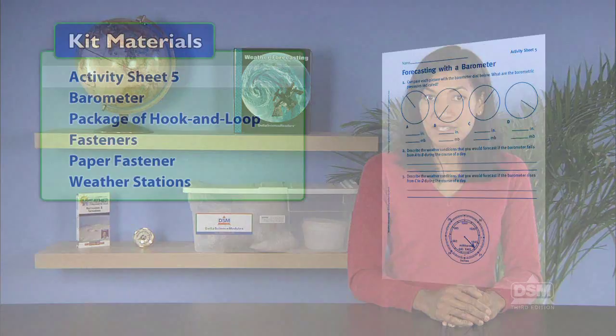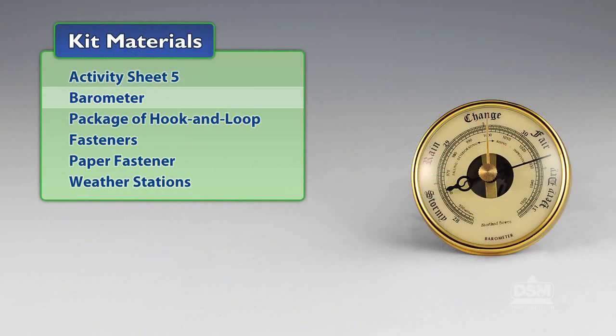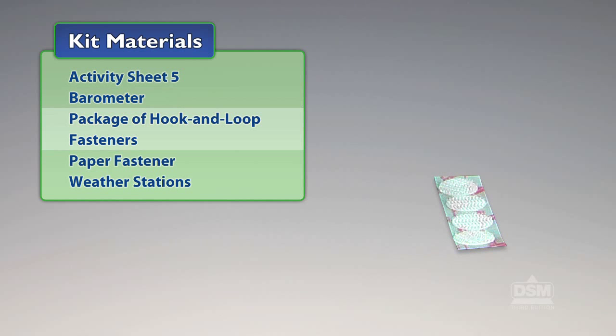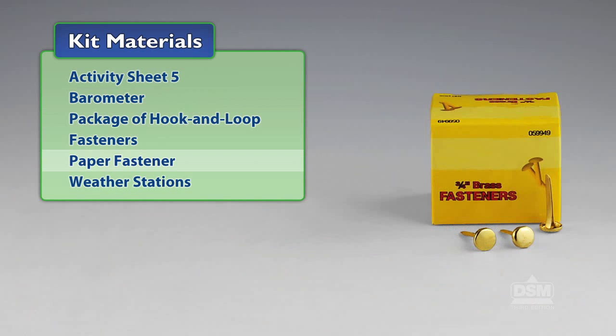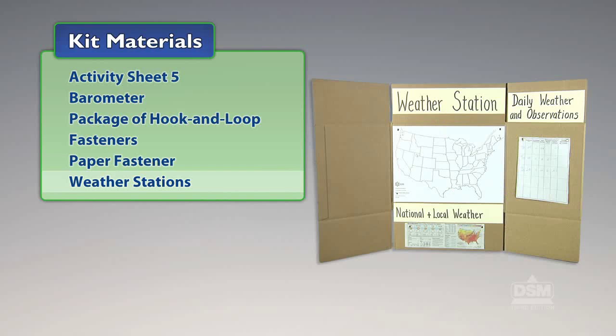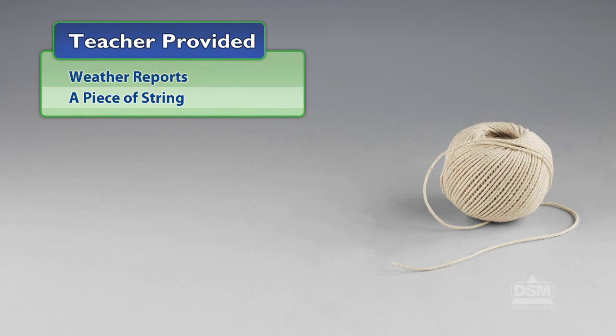You will need the following materials from the kit: Activity Sheet 5, Barometer, Package of Hook and Loop Fasteners, Paper Fastener, and Weather Stations. You will also need to provide weather reports and a piece of string.